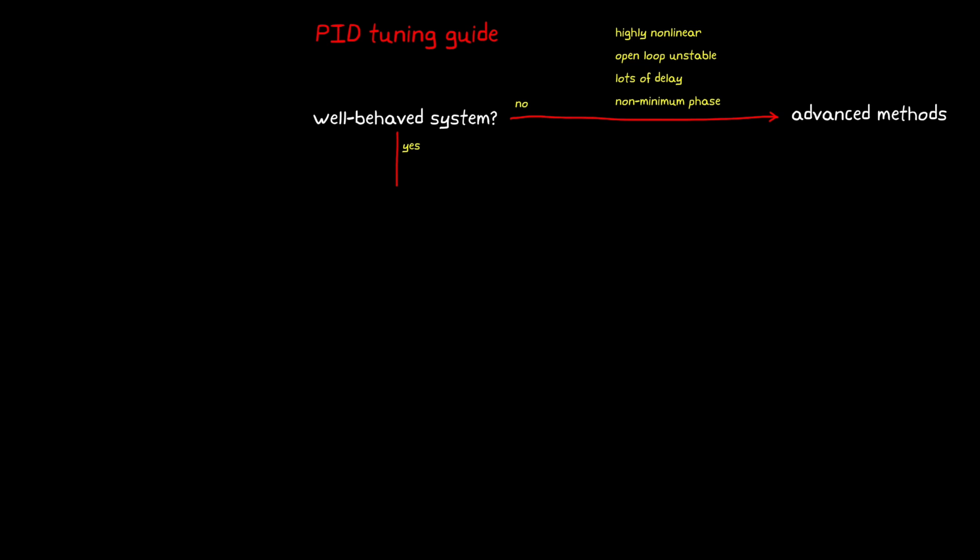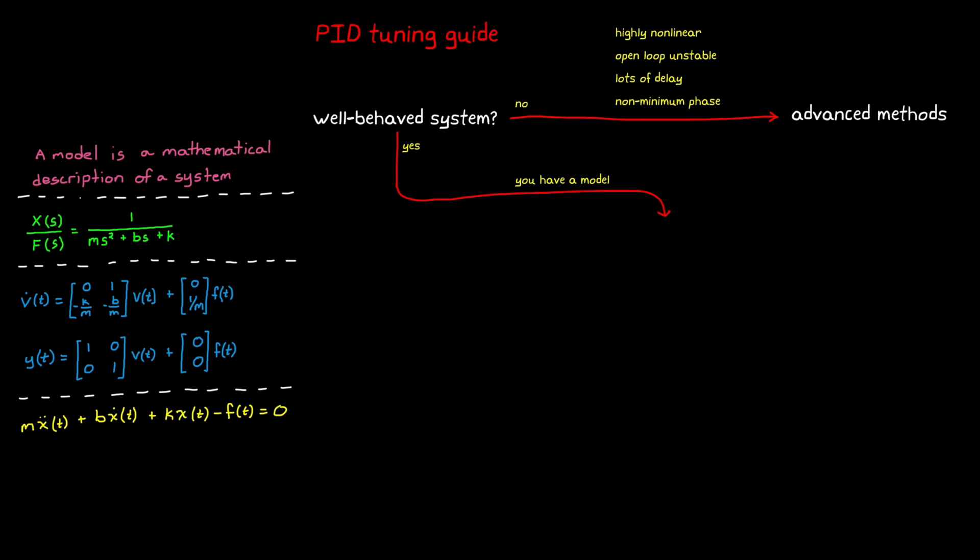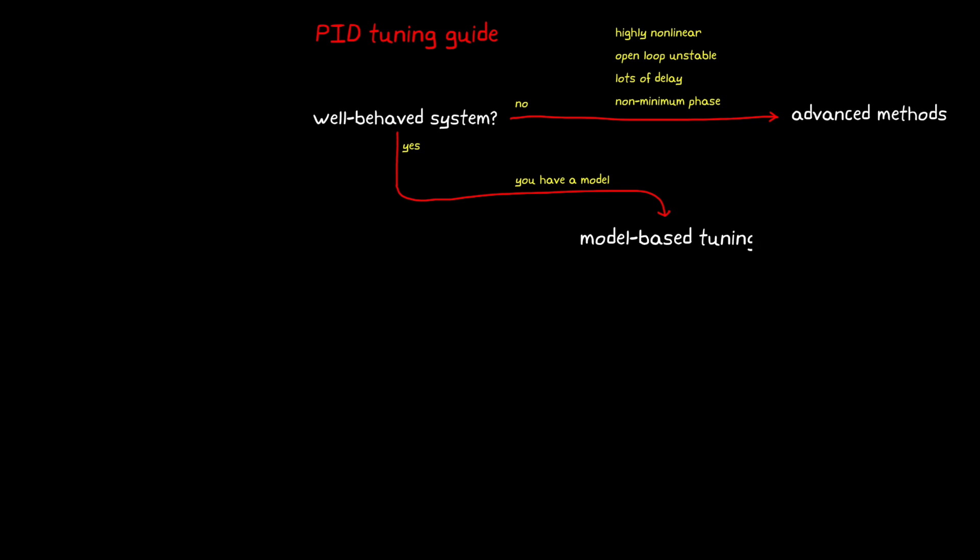From here we have two general situations. First, let's say that you're given a model of your system. A model is a mathematical description that could be presented as a set of transfer functions, state space matrices, equations of motion, or a more complex simulation. Perhaps you got it from a textbook, or maybe the company you're working for has a team that developed the model for you. In this case, you have the ability to tune the gains using a model-based approach.